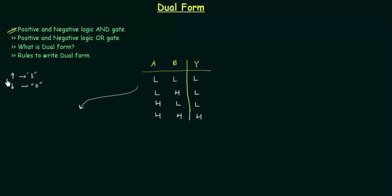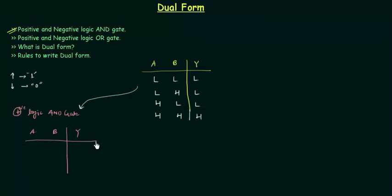So let's find out the positive logic AND gate. A and B are the two inputs and Y is the output. We fill the table using positive logic convention where low is zero and high is one: inputs 0,0 give output 0; inputs 0,1 give output 0; inputs 1,0 give output 0; inputs 1,1 give output 1.